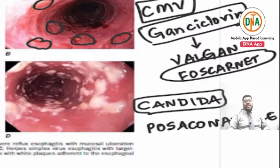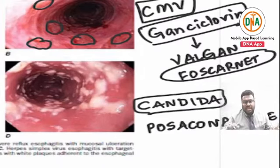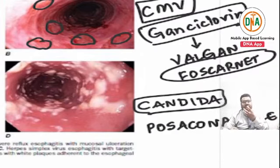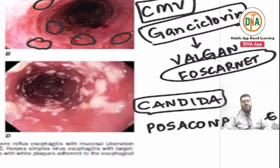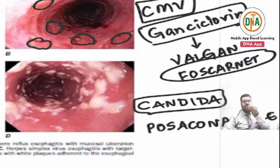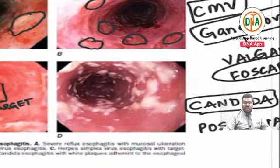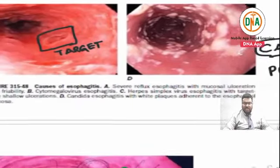In candidiasis, the associated findings include odynophagia - burning sensation or pain during swallowing. The patient will also have multiple oral ulcers and difficulty swallowing even a small loaf of food. The patient is typically a known diabetic. These are the key features of infectious esophagitis.